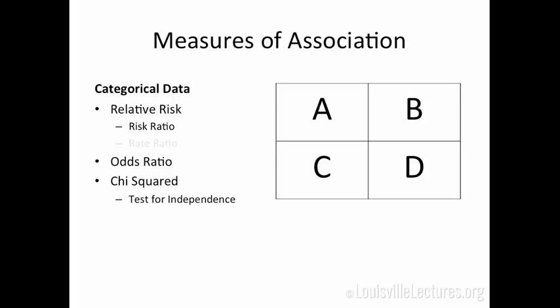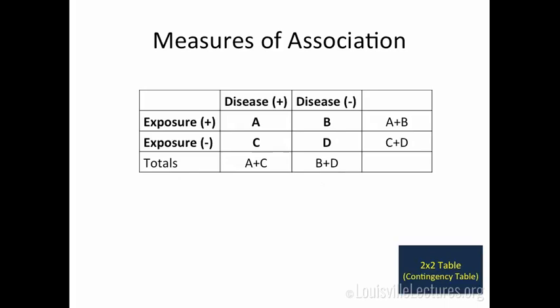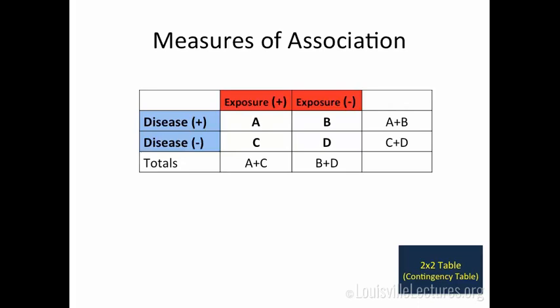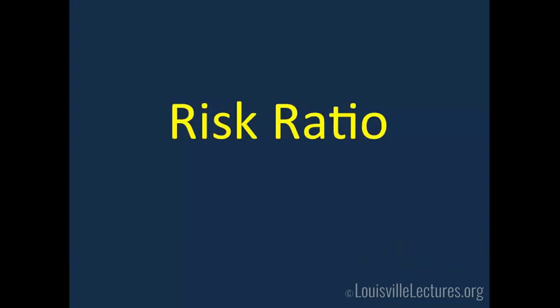I'm sure you've seen this if you've taken a stats class. We think about categorical data in terms of our A, B, C, D box — that evolves into this two-by-two table, sometimes called a contingency table, where we look at an exposure, some disease, and we want to compare them. You'll see the exposures on the top and diseases on the side, sometimes referred to as cases and controls. It really doesn't matter how the table is made up, as long as you understand how it's constructed and how you're going to use it.